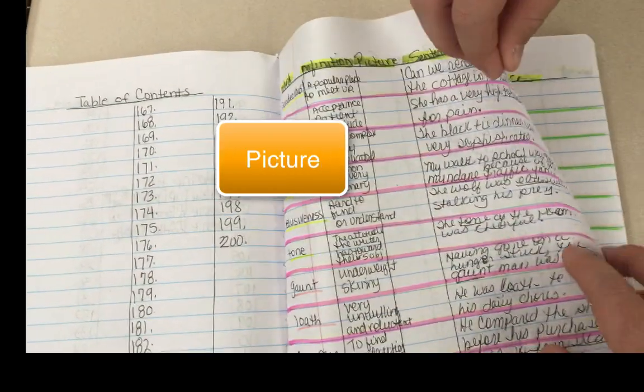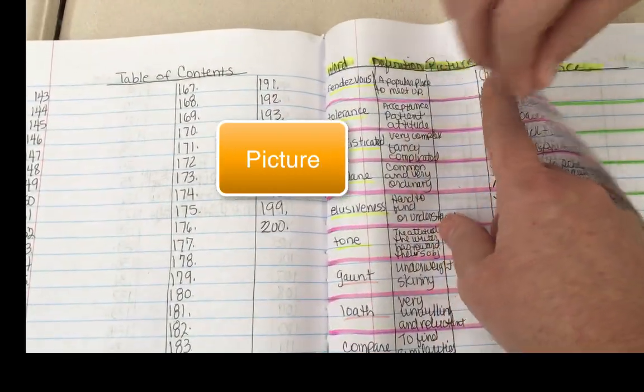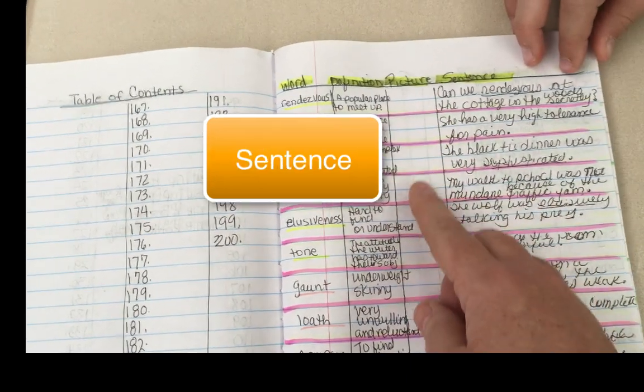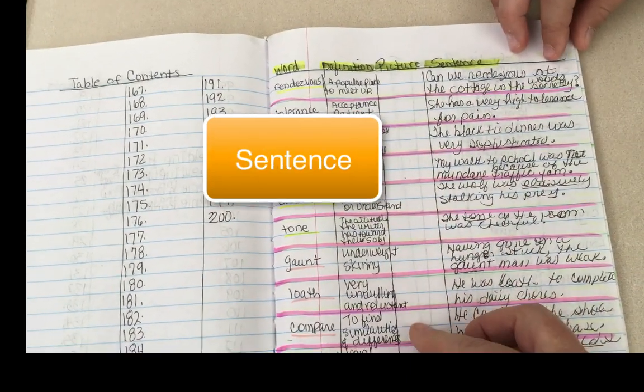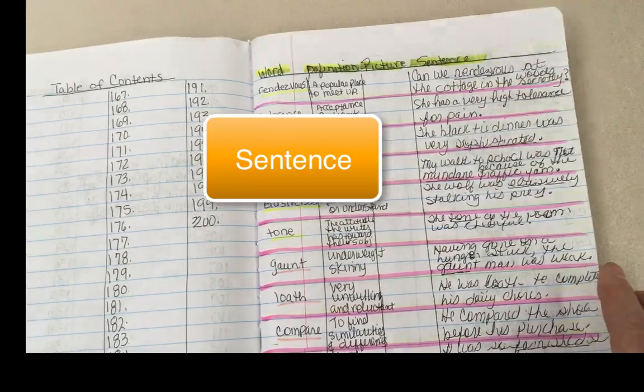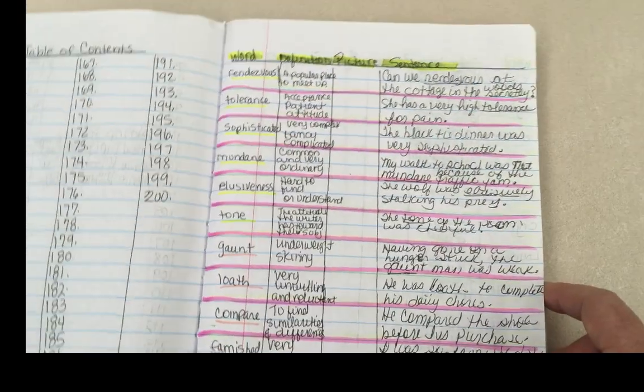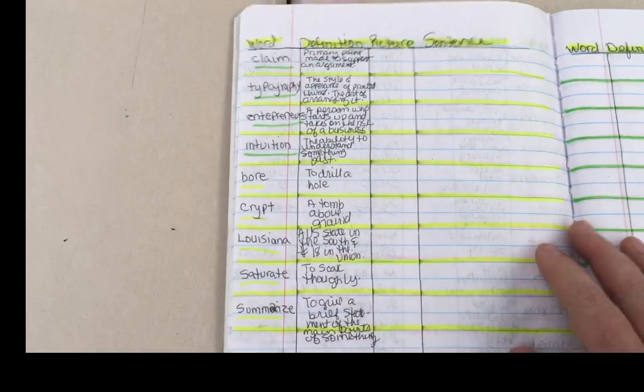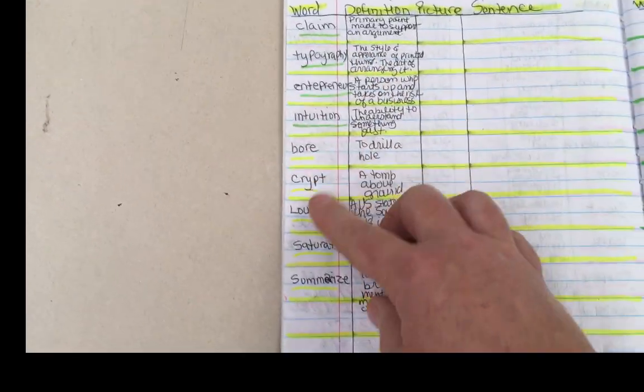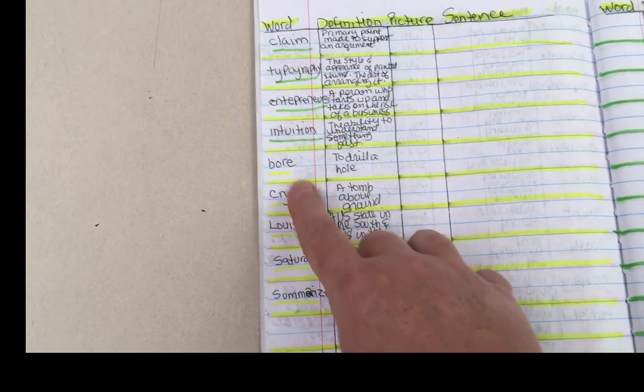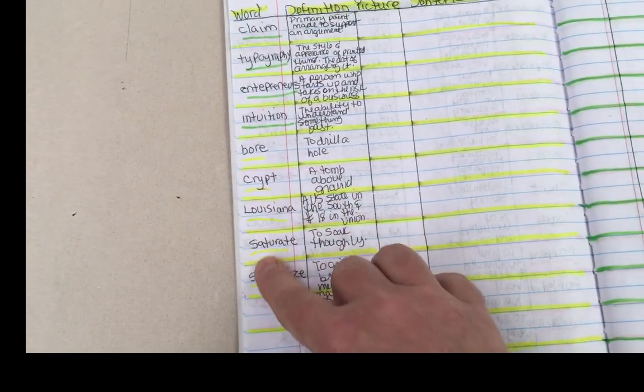And then notice I have the smallest area for the picture. It doesn't have to be elaborate, just a small enough space to draw a quick sketch representing the vocabulary word. And then here we go with more of the vocabulary words. And then these are actually up to date because these are this week's vocabulary words.